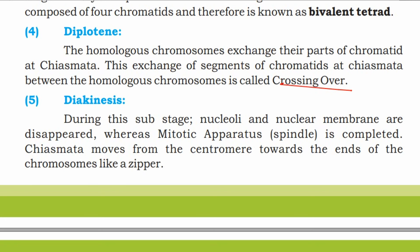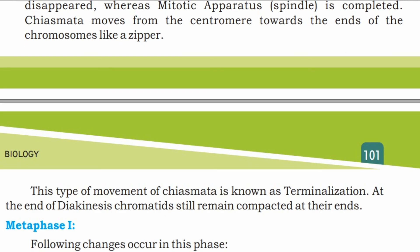During diakinesis, the nucleolus and nuclear membrane disappear and the mitotic spindle apparatus is completed. Chiasmata move from the centromere towards the ends of the chromosomes like a zipper — this type of movement is known as terminalization.